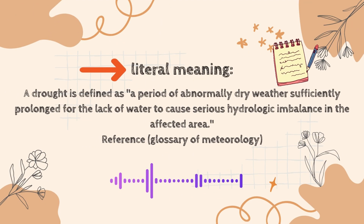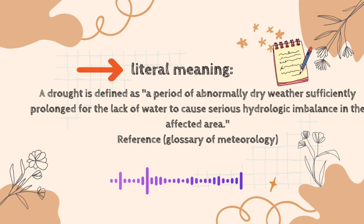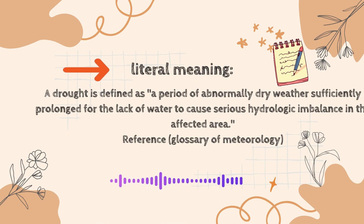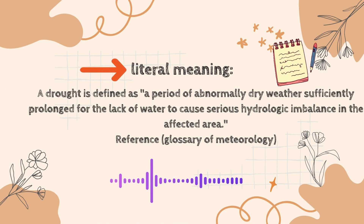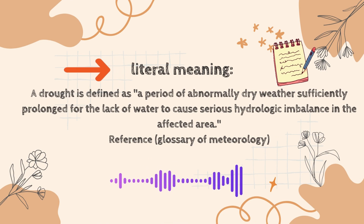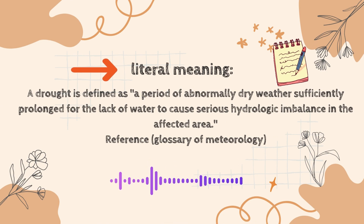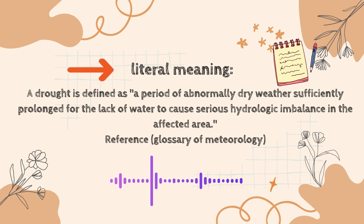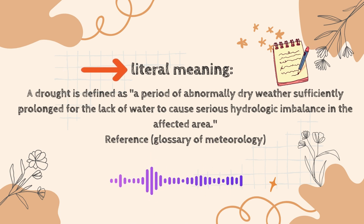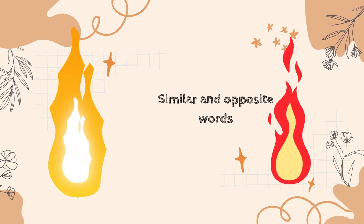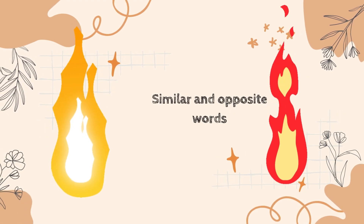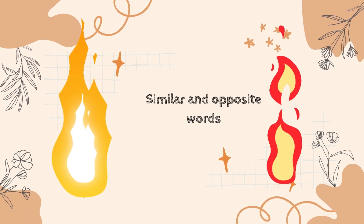Let us discuss the literal meaning of the word drought. A drought is defined as a period of abnormally dry weather sufficiently prolonged for the lack of water to cause serious hydrologic imbalance in the affected area. We have taken this reference from the Glossary of Meteorology.